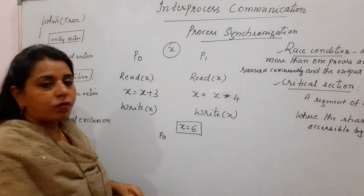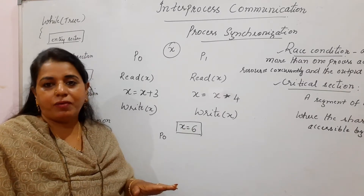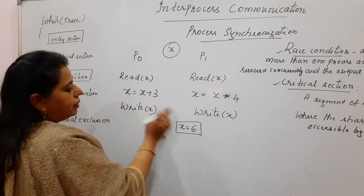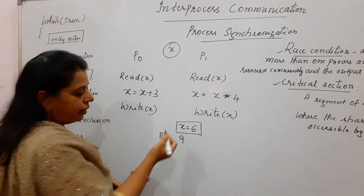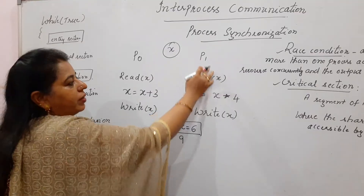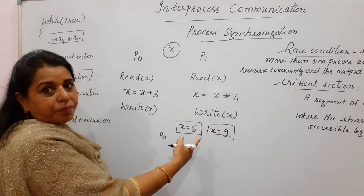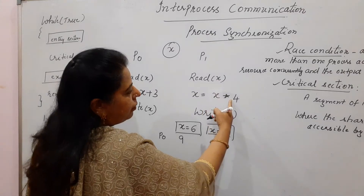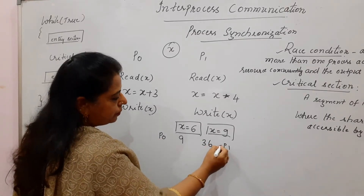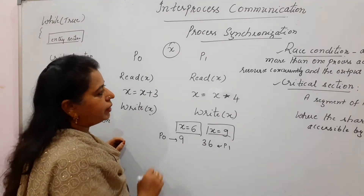Suppose for the first time we try it in a simpler manner: process P0 executes first and then P1. P0 will start, check the value — initial value is x, so x plus 3, that is 6 plus 3 equals 9 — and it writes the value as 9. Then once P0 has completed, P1 will start its execution. P1 will read the value for x, which is now 9 because P0 has updated it. P1 will compute 9 multiplied by 4 equals 36 and write the value as 36. This is done by P1.